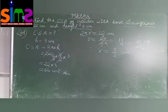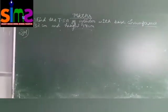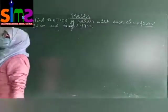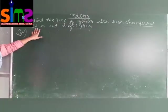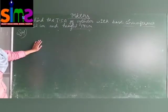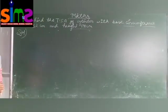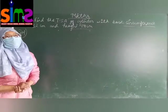All of you please note it down. Now, we are having here question number 2. Find the TSA of cylinder with base circumference 132 centimeter and the height 14 centimeter.